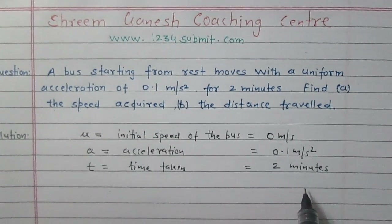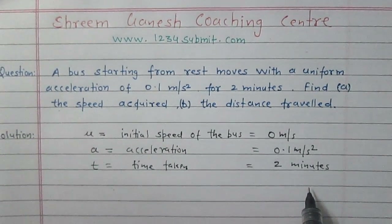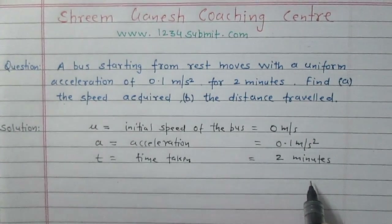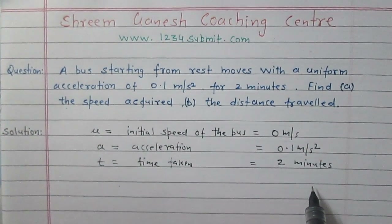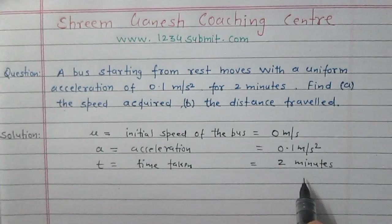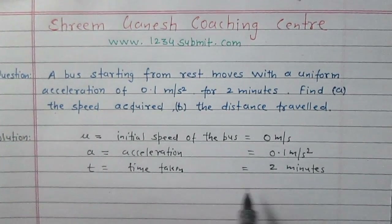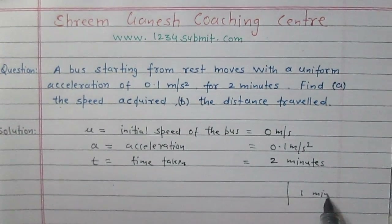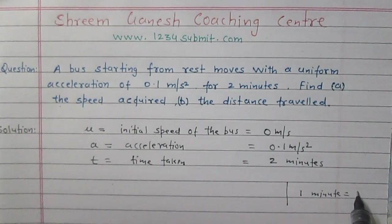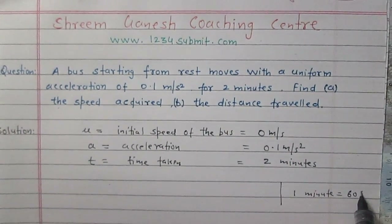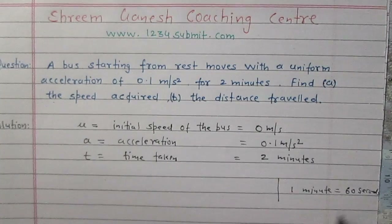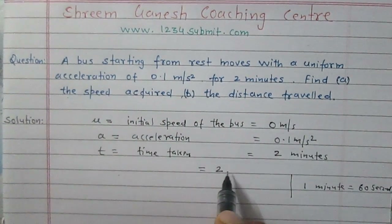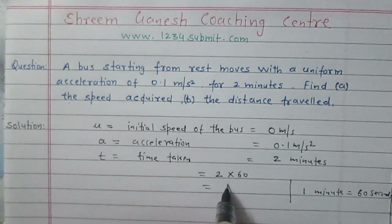We are working in the MKS system — meter, kilogram, and second — so time must be given in seconds. Here the time is given in minutes, and we know that one minute equals 60 seconds, so two minutes is 120 seconds.